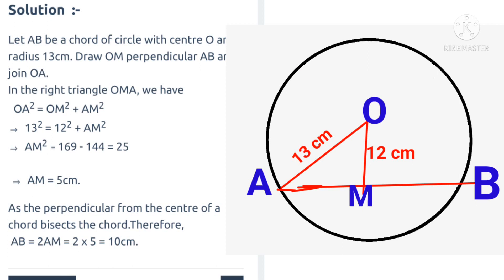In the right-angle triangle OMA, we apply the Pythagorean theorem. OA is the hypotenuse, OM is the perpendicular, and AM is the base. So OA² = OM² + AM², which gives AM² = OA² − OM². Substituting: AM² = 13² − 12² = 169 − 144 = 25. Therefore AM = √25 = 5 centimeters.